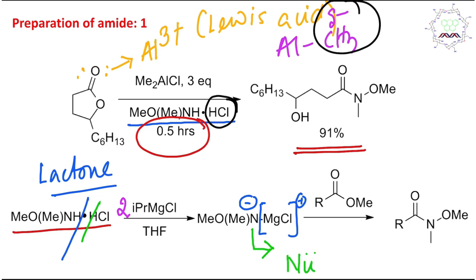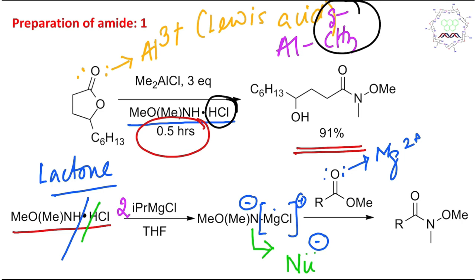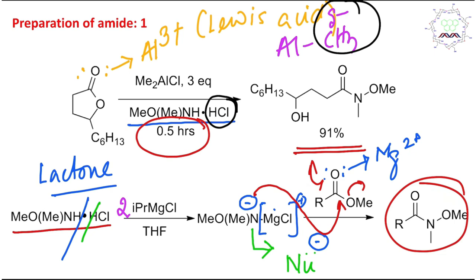The magnesium²⁺ can also act as a Lewis acid and coordinate to the carbonyl oxygen, activating the ester carbonyl for nucleophilic attack. Consequently, the N-minus attacks through an acyl nucleophilic substitution-type reaction to produce the Weinreb derivative. This example demonstrates Weinreb amide preparation that is very important from a synthetic chemistry point of view.